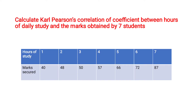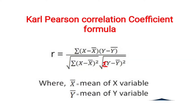Calculate Pearson coefficient of correlation between hours of daily study and the marks obtained by 7 students. Hours of study: 1, 2, 3, 4, 5, 6, and 7. Marks obtained: for 1 hour it is 40, for 2 hours it is 48, for 3 hours it is 50, for 4 hours it is 57, for 5 hours it is 66, for 6 hours it is 72, and for 7 hours it is 87.